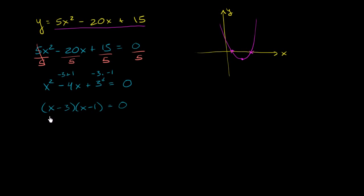And now we can think about what x's will make this expression 0. And if they make this expression 0, well, they're going to make this expression 0, which is going to make this expression equal to 0. And so this will be true if either one of these is 0. So x minus 3 is equal to 0, or x minus 1 is equal to 0.